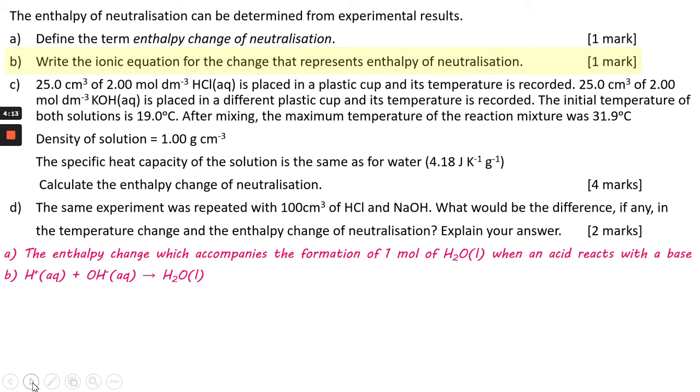If you were to take any neutralization and write out the equation for it, and then get rid of the spectator ions to write an ionic form of that equation, the simplest ionic equation would be what we've put down here. H plus aqueous plus OH minus aqueous gives you H2O as a liquid.